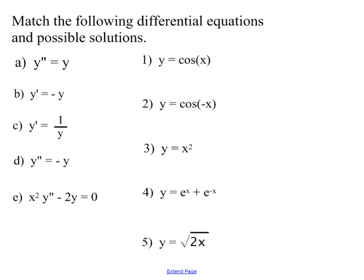Now for our last piece — we have a bunch here and this is a good opportunity to pause and try these yourself. We're trying to figure out which ones are solutions — it's a matching exercise. On the left are differential equations, on the right are possible solutions. Since some equations are first order and some are second order, I need the first and second derivatives of each. For y = cos(x): y prime = −sin(x), y double prime = −cos(x).